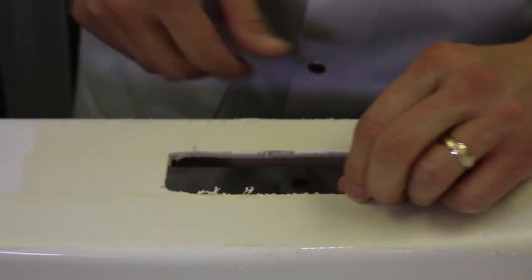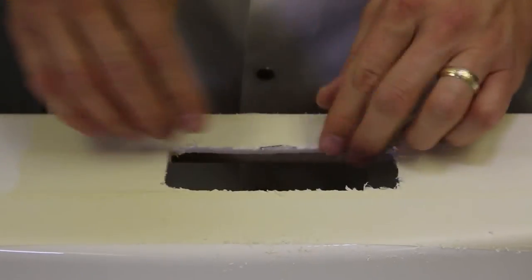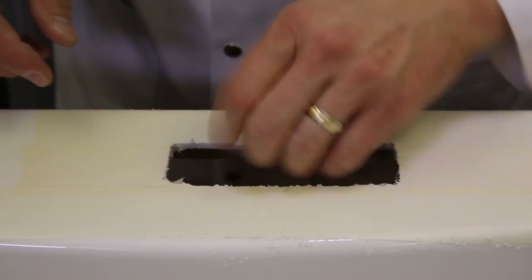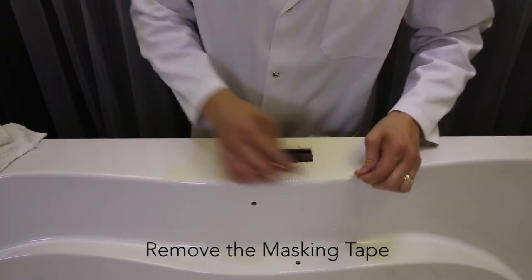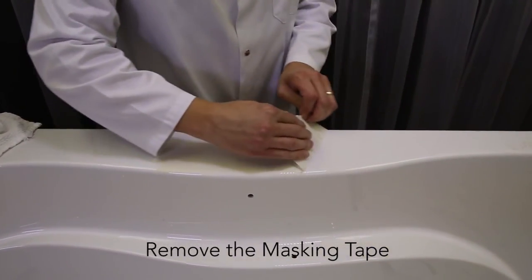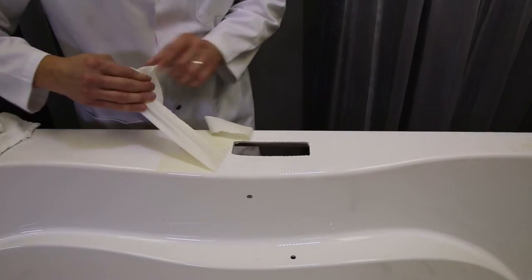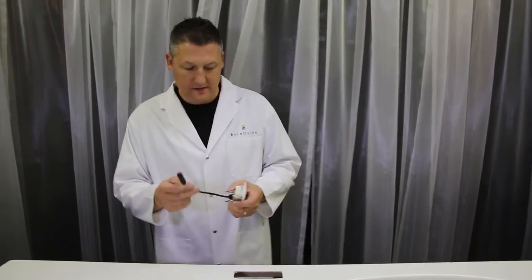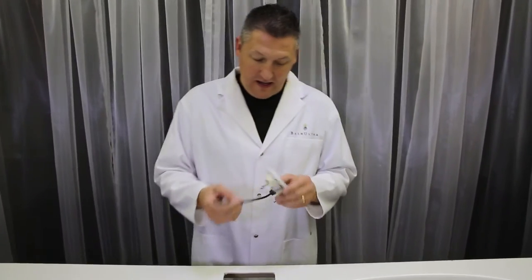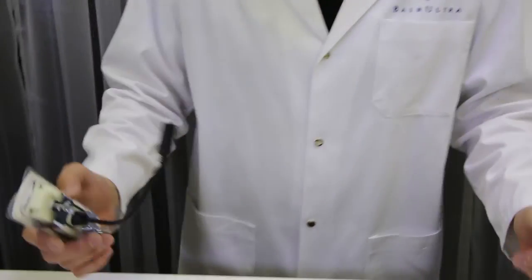Now we have the hole for our keypad. We can remove the masking tape. And the next step, the last step, is to install the control keypad on the bathtub.